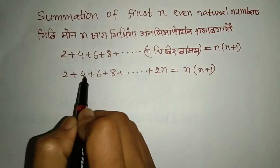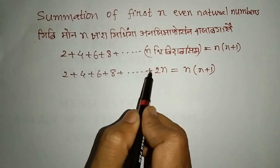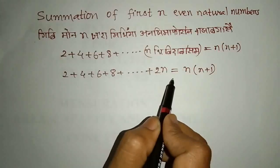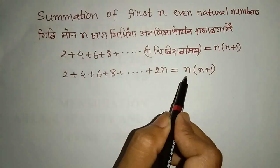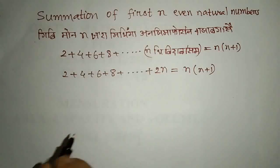2, 4, 6 — if you want the formula, the series 2 plus 4 plus 6 and so on gives the formula n into n plus 1. So if you want the plus 2n, then the result is n into n plus 1.